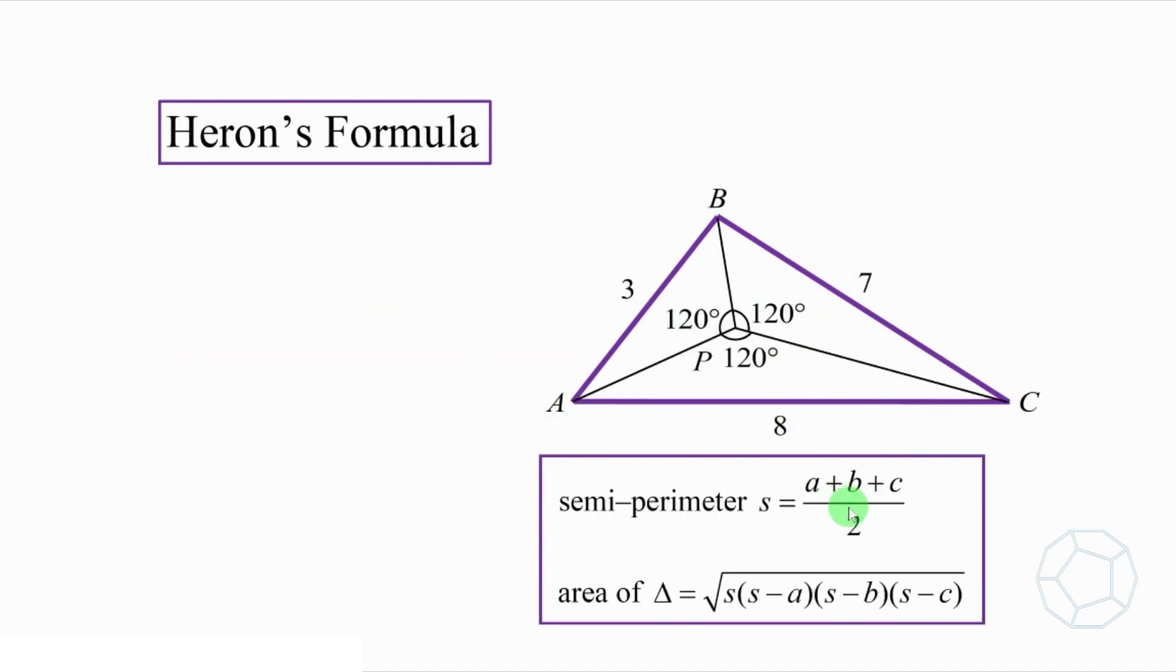Let's put the length 3, 7, and 8 into the formula. Then S is equal to 9. And the area of triangle A, B, C is equal to the square root of 9 times 9 minus 3 times 9 minus 7 times 9 minus 8, which is the square root of 108. Simplify that, we get 6 square root 3.